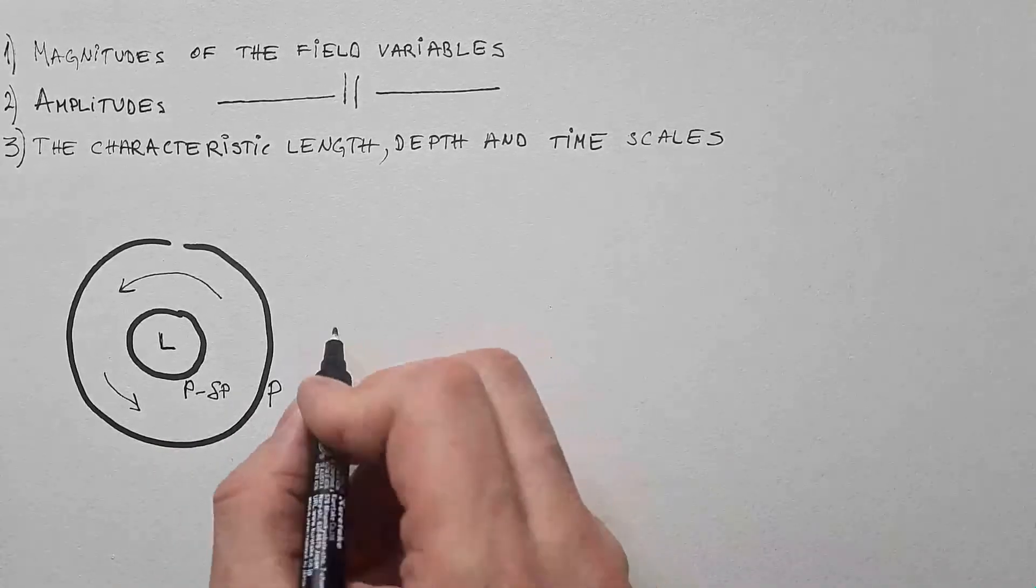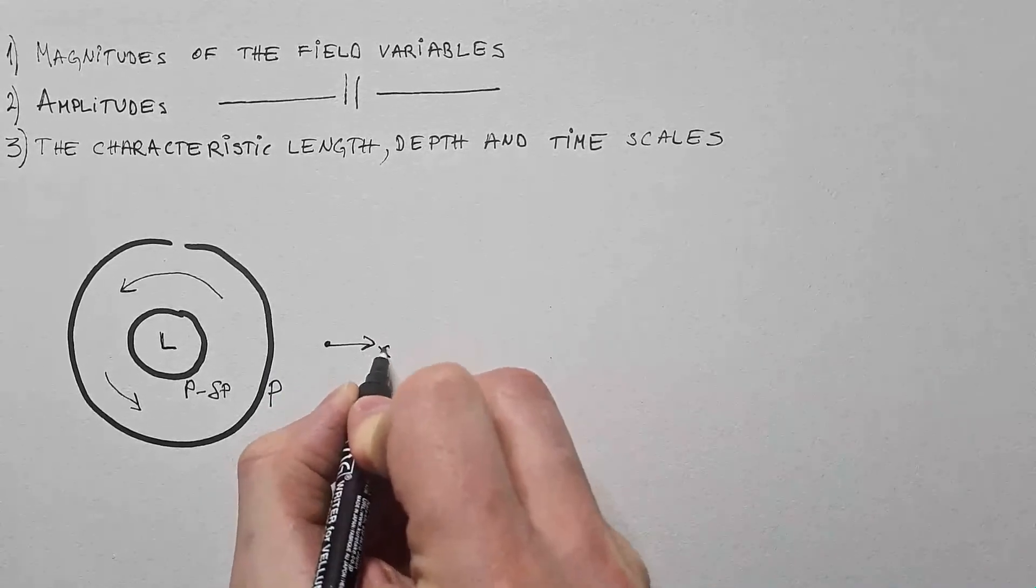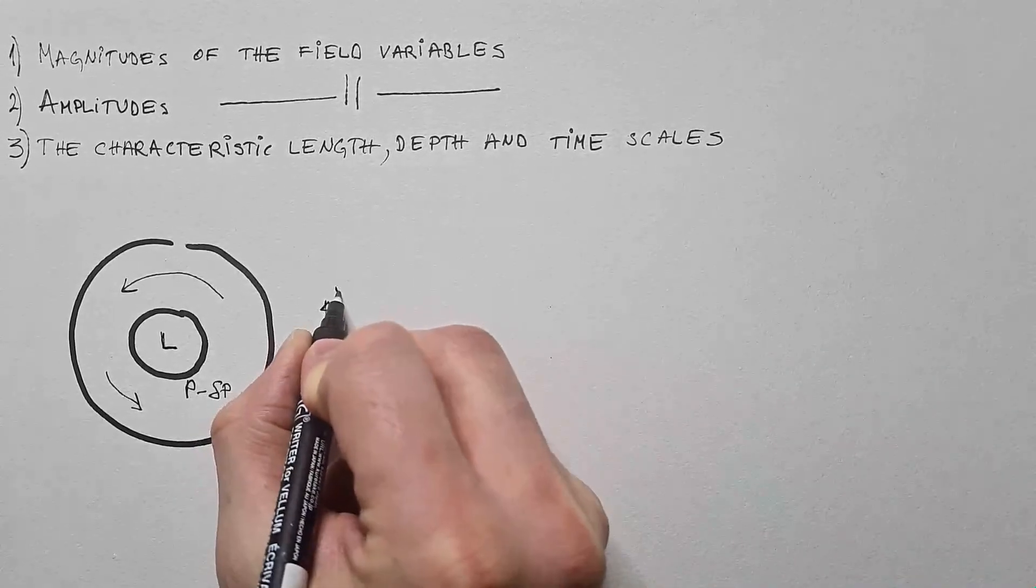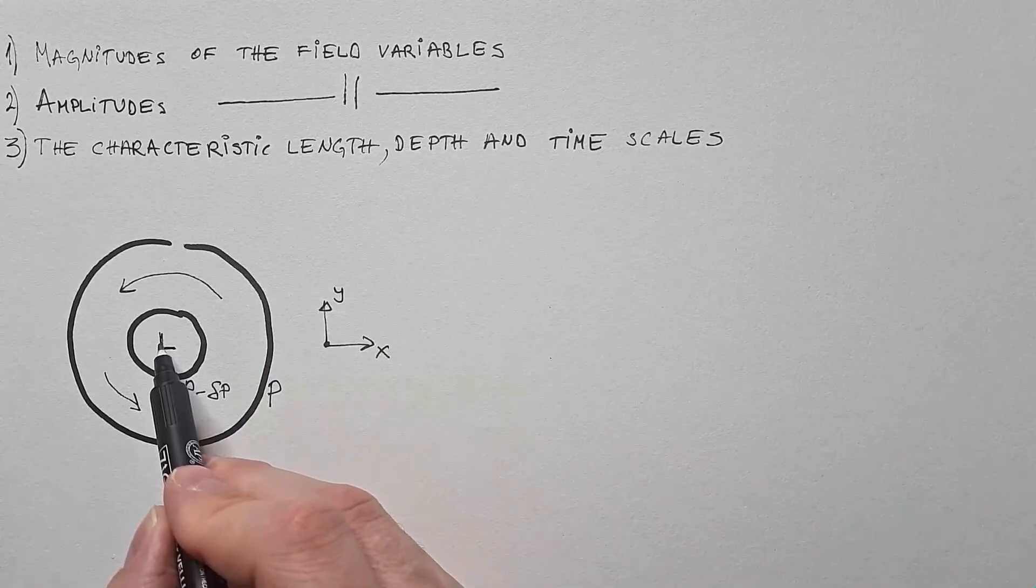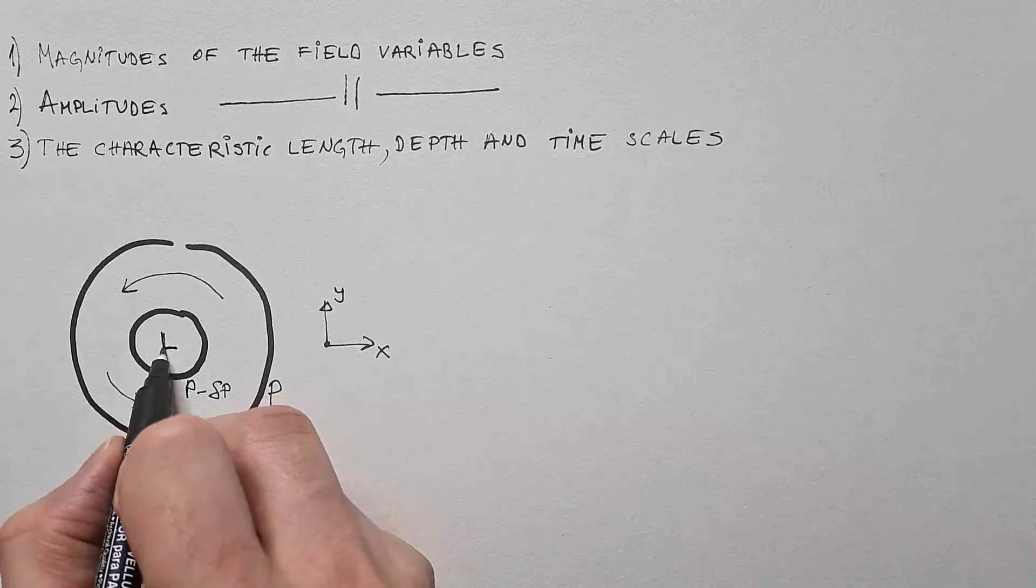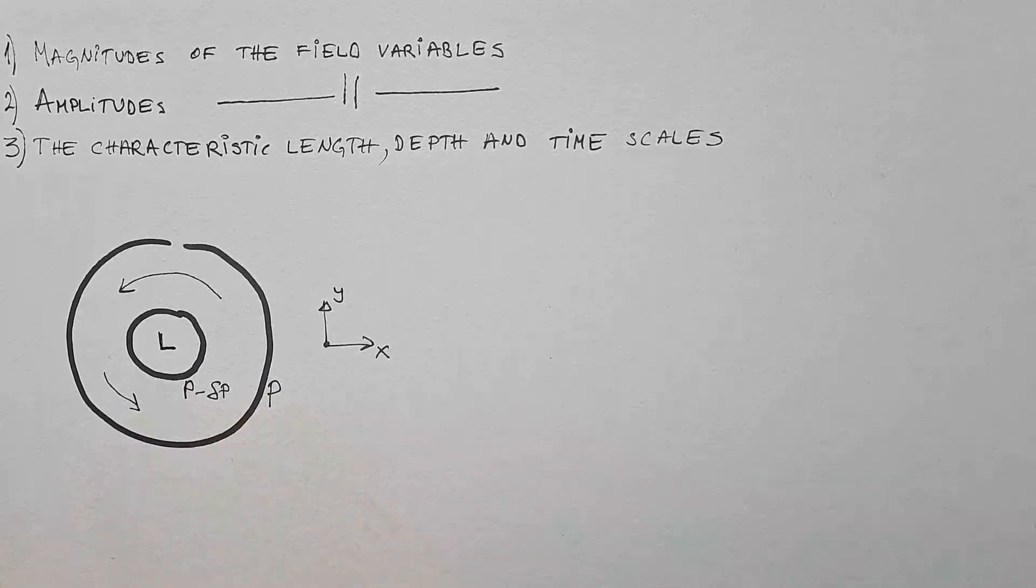Now we can also assign a coordinate system. Let's say this is x, this is y. In principle, I can even put it in the center of this cyclone, but I didn't do it because then I will mess up this L that I brought here.